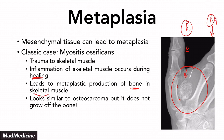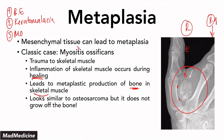So we covered three main examples of metaplasia: number one is Barrett's esophagus, number two is keratomalacia, and number three is myositis ossificans. These are three classic exam presentations for metaplasia, including how it occurs and the contributing factors.